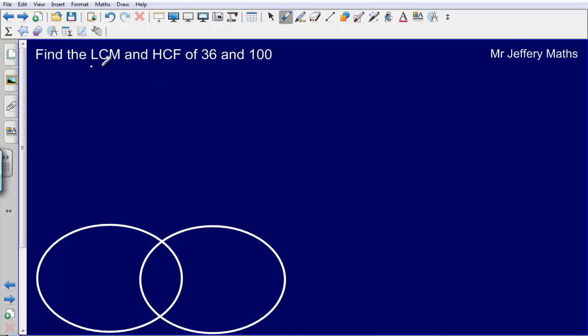Hello, second video on finding the lowest common multiple and highest common factor for a pair of numbers that are fairly large using product of prime factors. So to begin with, we just start off by finding each of 36 and 100 as a product of prime factors.